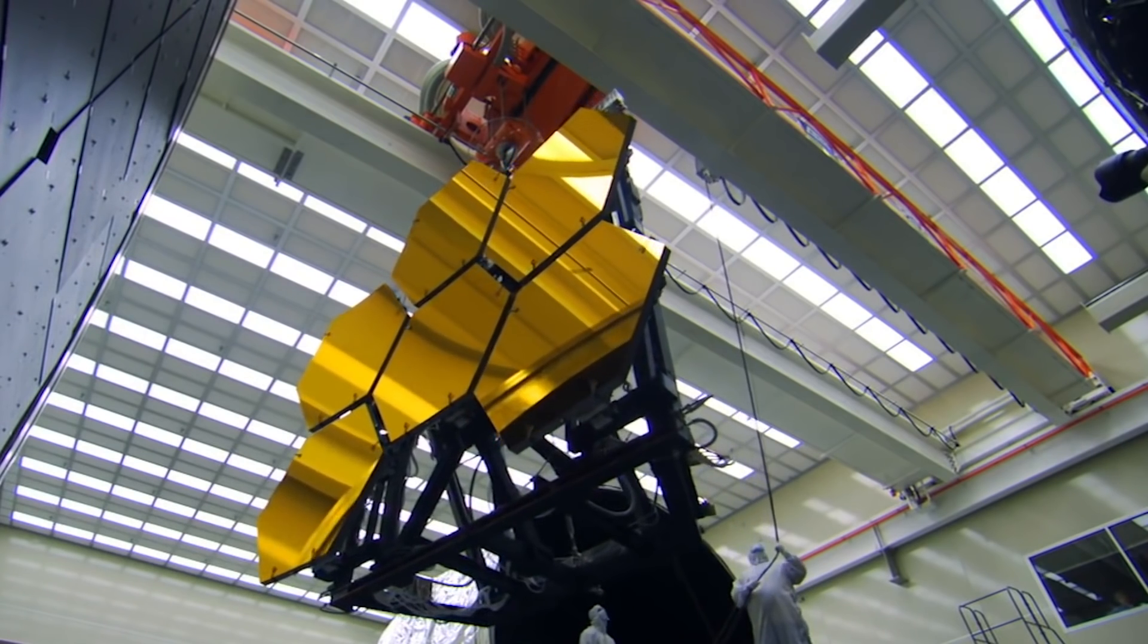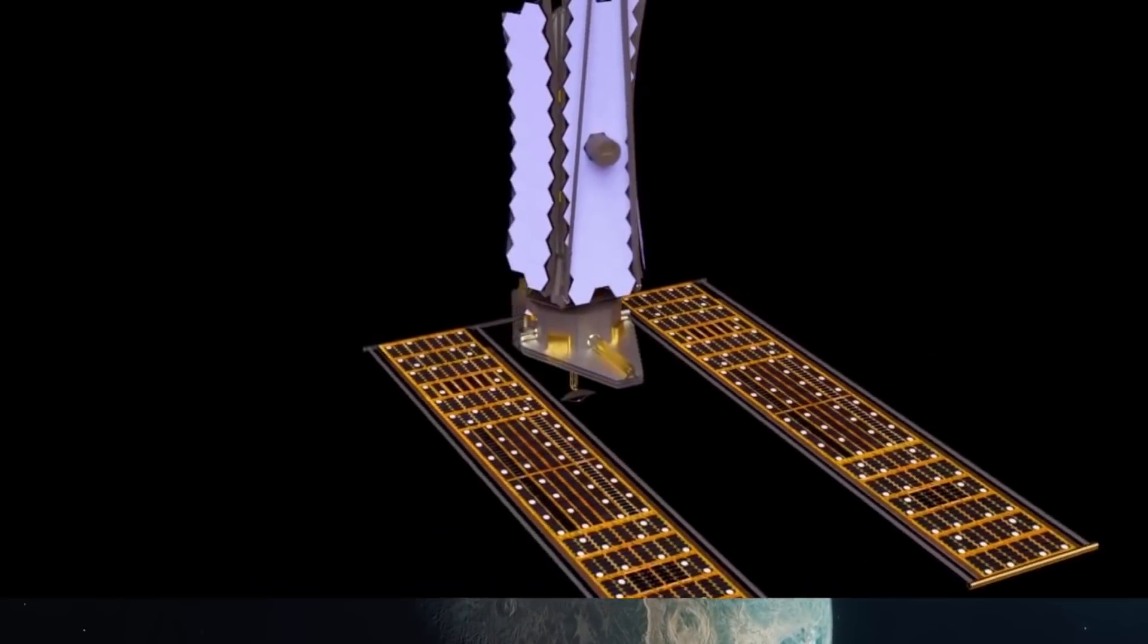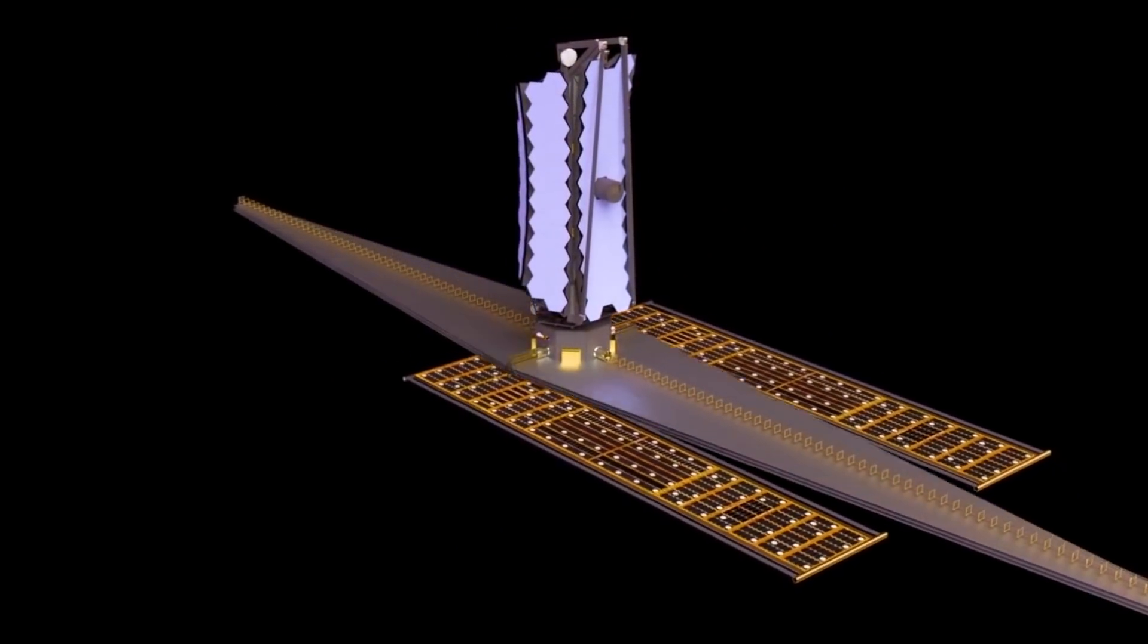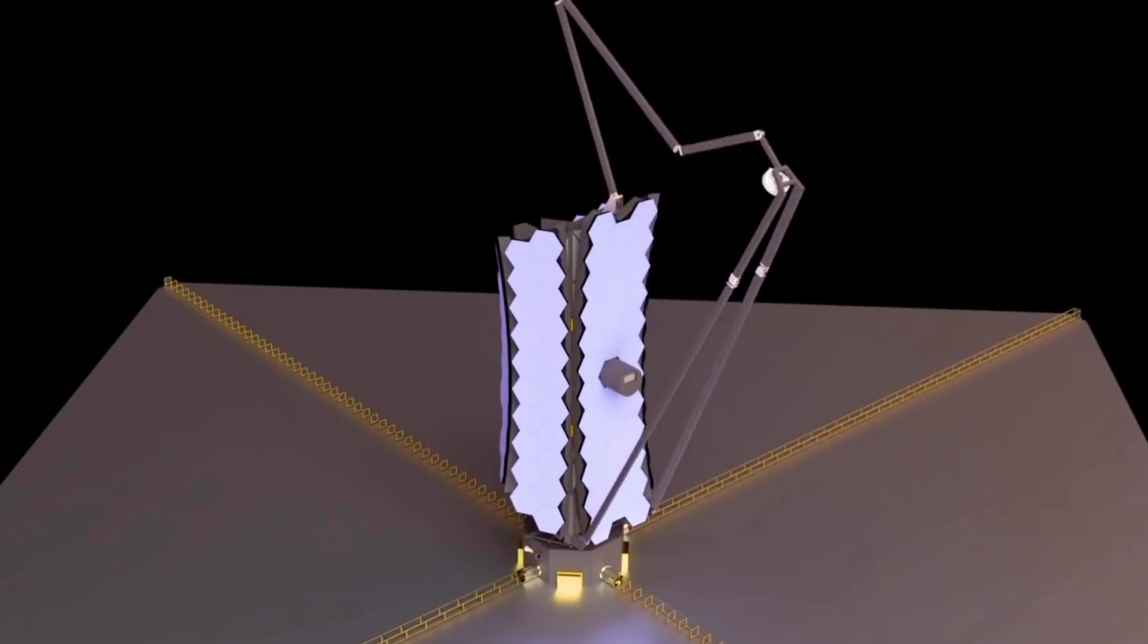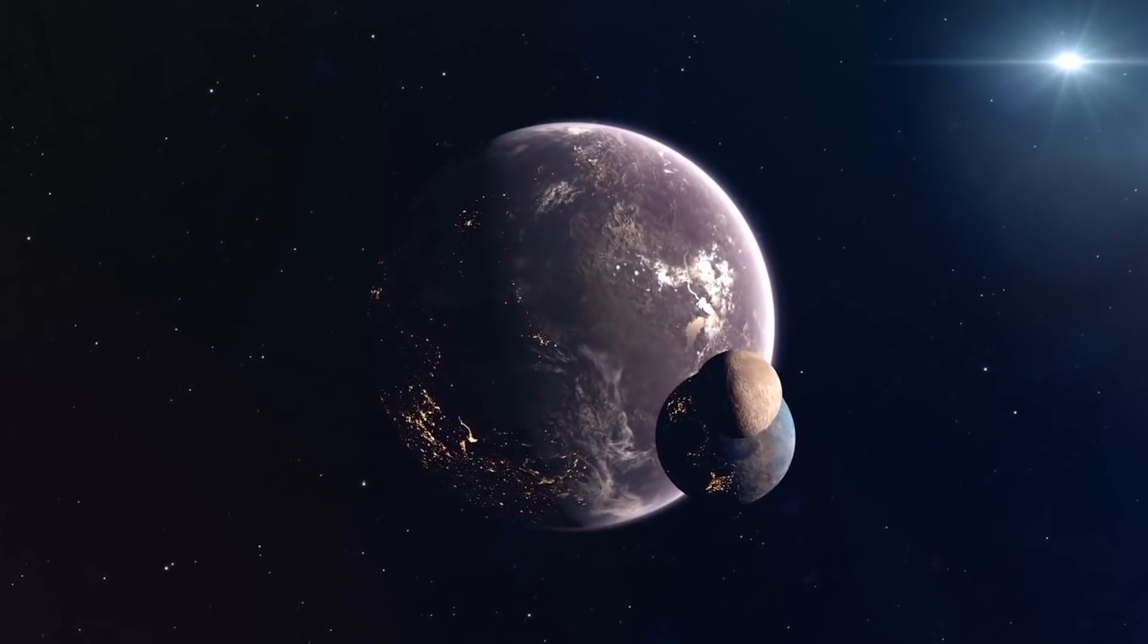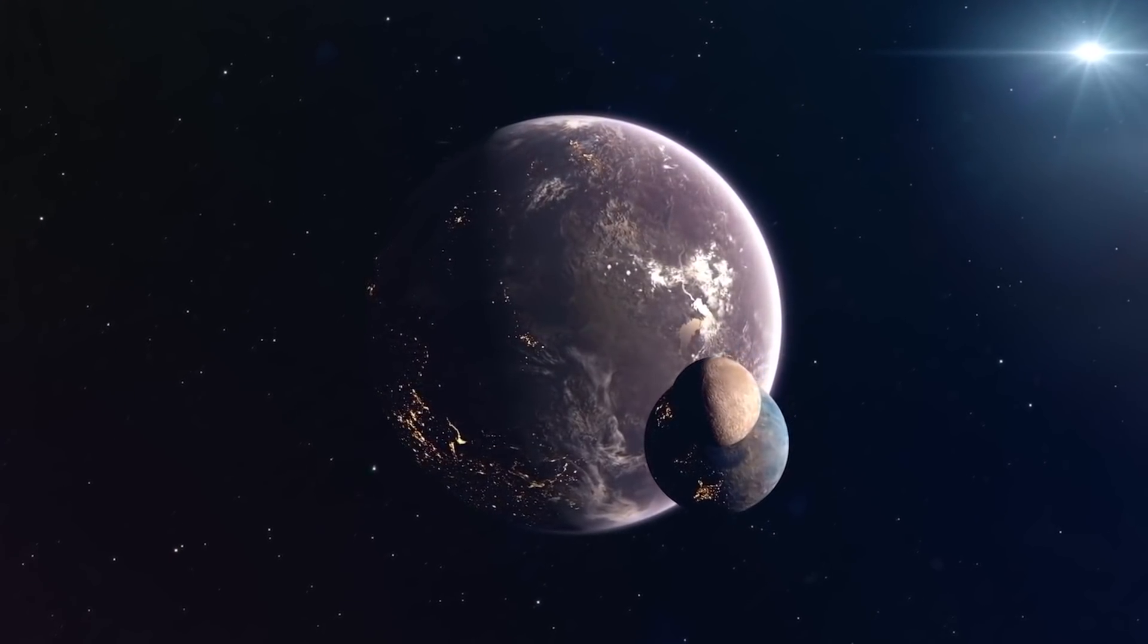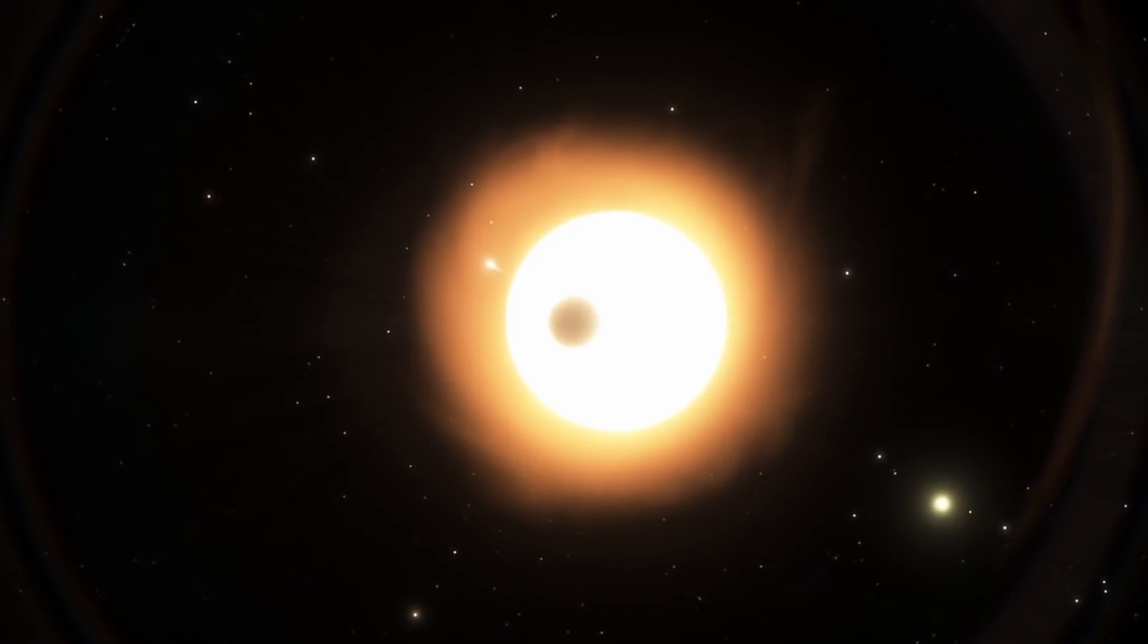LUVOIR's most ambitious design would include a mirror the size of a Carnival Ferris wheel. Astronomers anticipate that this multi-purpose telescope will be able to accomplish a range of astronomical science goals, including observing Jupiter's cloud tops with a 15-mile or 25-kilometer resolution and searching for biosignatures in the atmospheres of other planets.